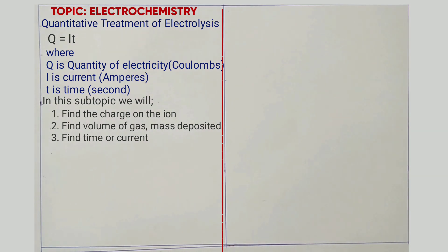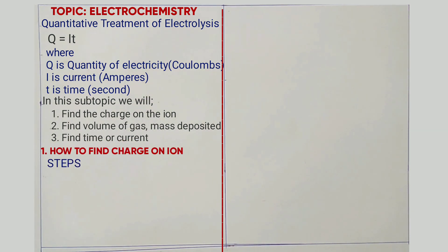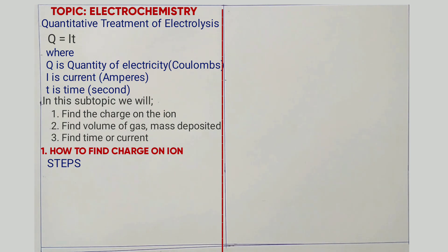Now the first one is finding the charge on an ion. To be able to find the charge on an ion, the student should be provided in the question with the mass deposited. It should also be provided with current and time taken.